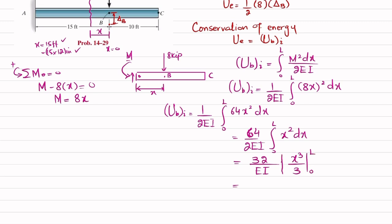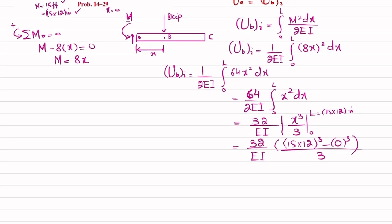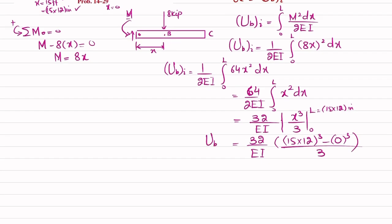Now, 32 divided by EI. If you put the limit, you can see L will be equal to 15 times 12, so I will write (15 multiplied by 12) cubed minus 0 cubed, divided by 3. That will give you strain energy due to bending.